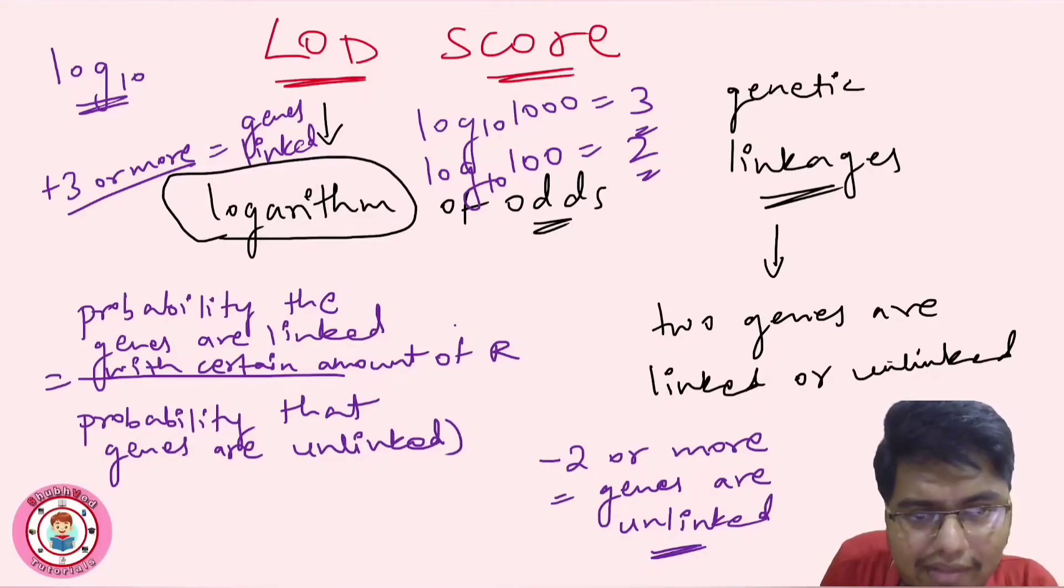So what we can say? The ratio is 1000 is to 1. Right? Means 1000 is the probability that genes are linked with certain amount of recombination, and 1 is the genes that are unlinked. So this is more, so thus genes are linked.